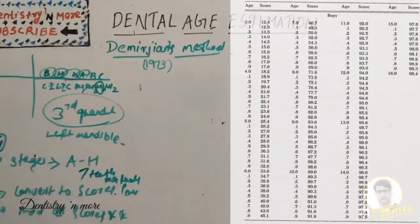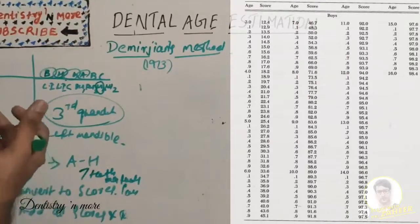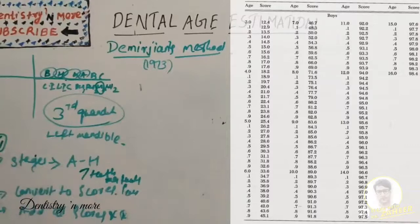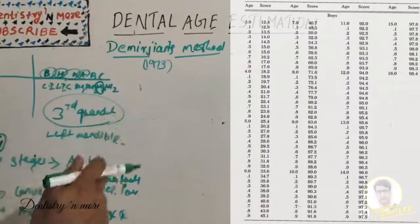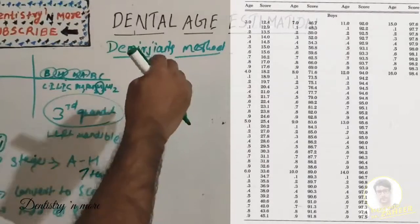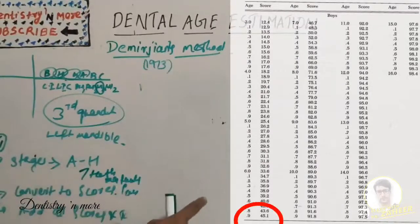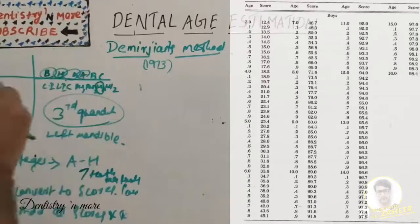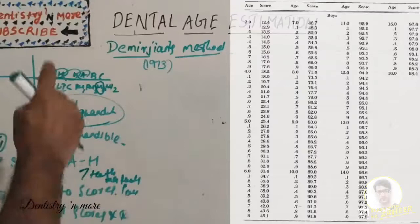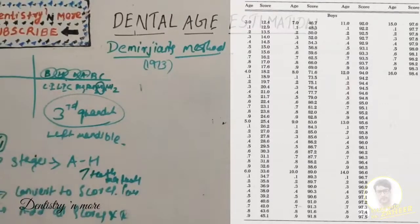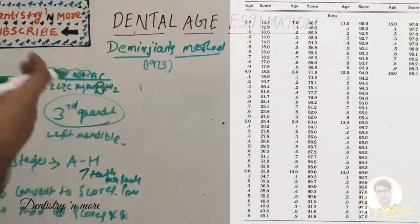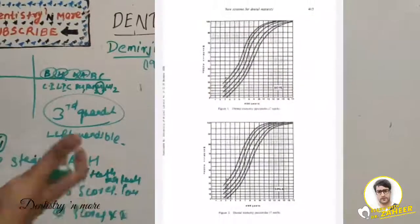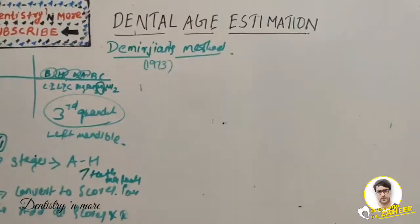Suppose we get a total value of 45 for a boy - we check the score 45 in the boys' table, and it comes to approximately six years and nine months. So we find that the dental age of that particular person is six years and nine months. We can also plot on centile charts where the age of the child is known. That is how we calculate dental age using the radiographic method - Demirjian's method.